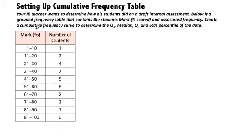In this example, your IB teacher wants to determine how his students did on a draft internal assessment. Internal assessments are long papers. Below is a grouped frequency table that contains the student's mark, meaning their grade, and associated frequency. Their grade is reported in percentages. So this is 1 to 10%, 11 to 20%, and so on and so forth.